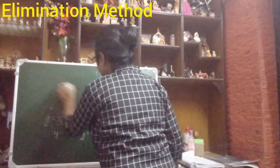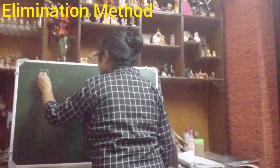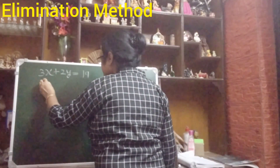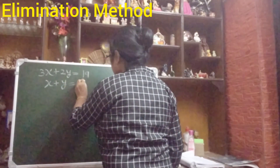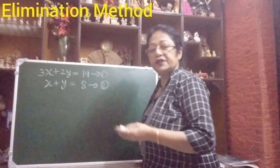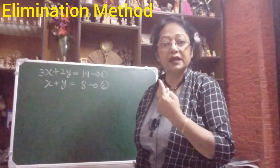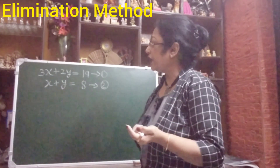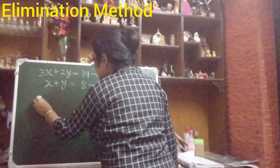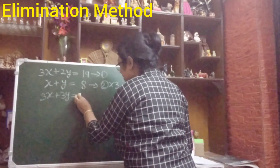So, let me take one more sum. I am taking: 3x plus 2y equals to 19, and x plus y equals to 8. This is equation number 1 and this is equation number 2. Now, see the coefficient of x — in equation number 1 it is 3, and in equation number 2 it is 1. So we have to make them equal. Very simple — what we will do? We will multiply equation number 2 by 3, so it will become 3x plus 3y equals to 24.